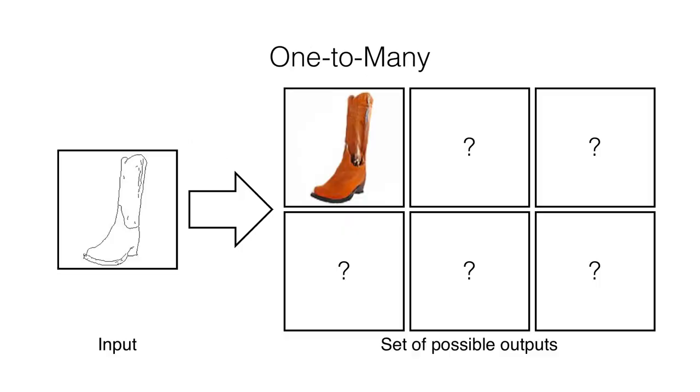However, many of these mappings are one-to-many in nature, and Pix2Pix only produces a single answer. Can we perhaps create a system that produces a distribution of answers?